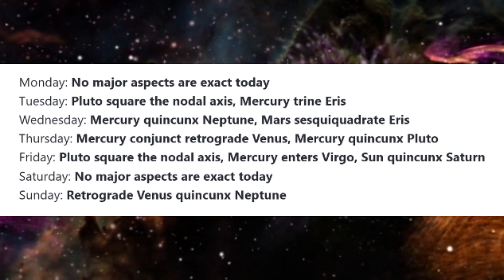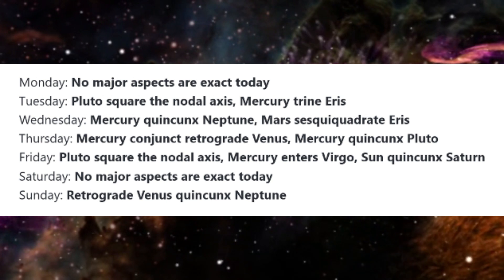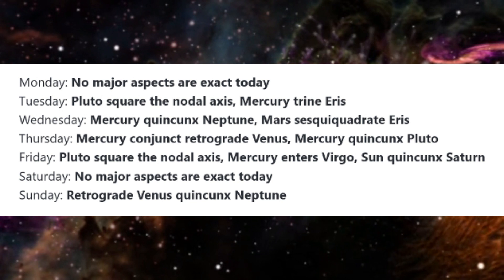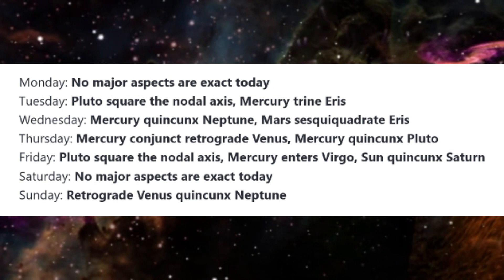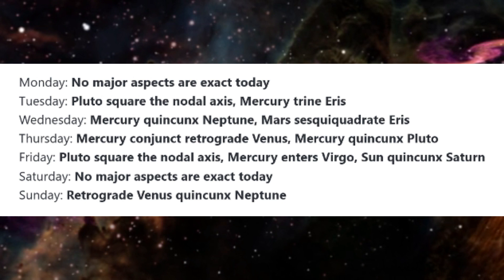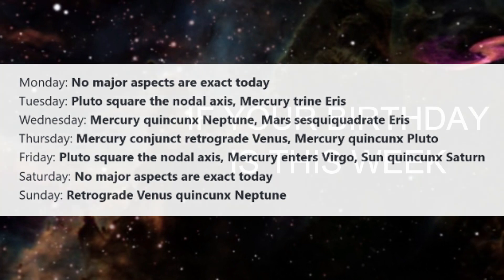On Sunday, retrograde Venus is quincunx Neptune. We may not see another person or a financial situation clearly with this aspect. Disillusionment can occur if someone or something doesn't meet our expectations. Since Venus is retrograde, it may be worthwhile to consider if we have experienced an unhealthy naivete or idealism at other times of our lives.